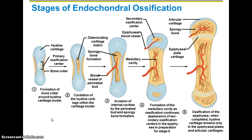The second type of ossification is called endochondral ossification. Intramembranous ossification was for all flat bones — your cranial bones and clavicles. Endochondral ossification is basically for all other bones besides your skull and clavicles. It develops about the second month of development in the fetus inside of the mother's uterus.